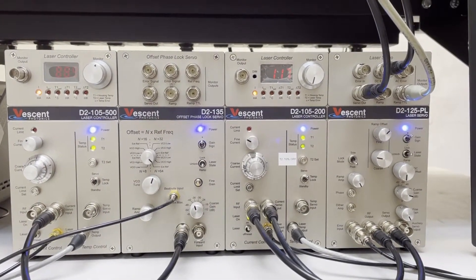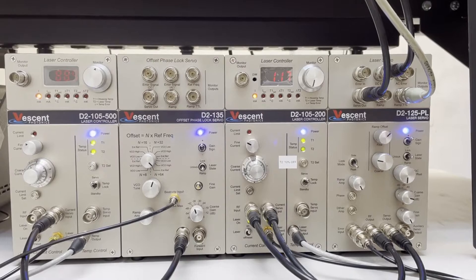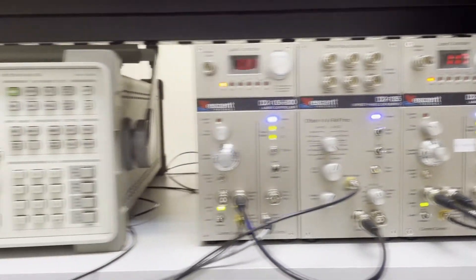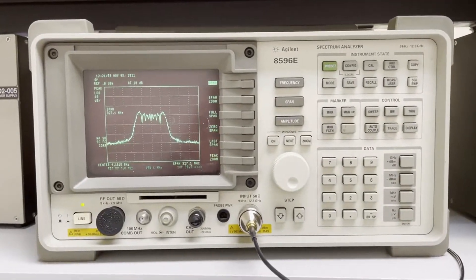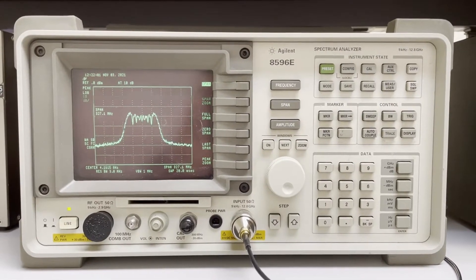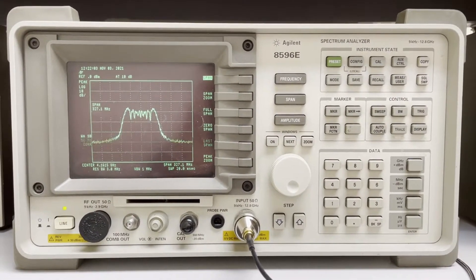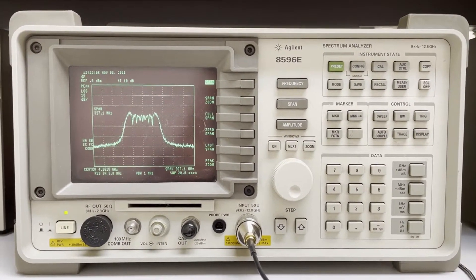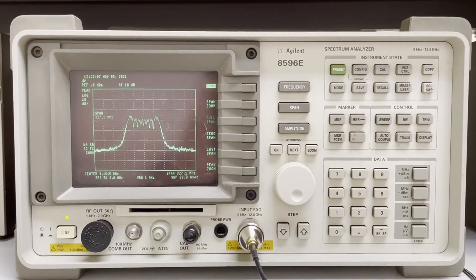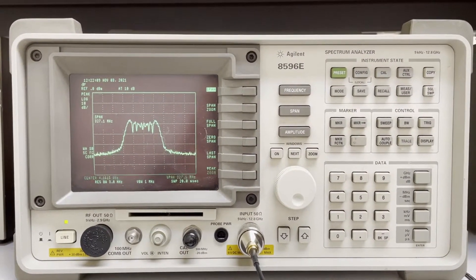We are currently in peak lock mode and we are not ramping. The reason we're not ramping is so that we can come over here and take a look at this beat note. Now, if you've ever tried this before, this may look familiar. What we're seeing is a ton of noise on what should be an ordinarily very thin, well-defined beat note.